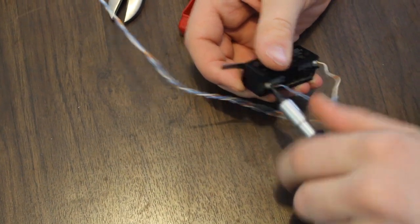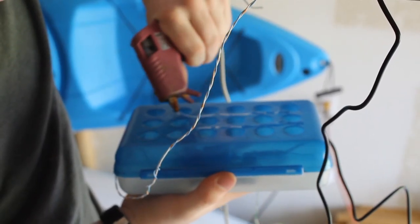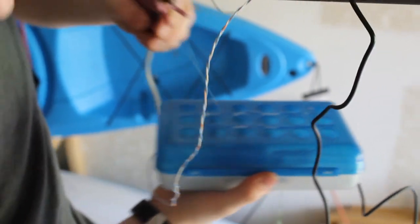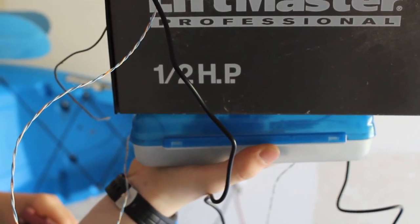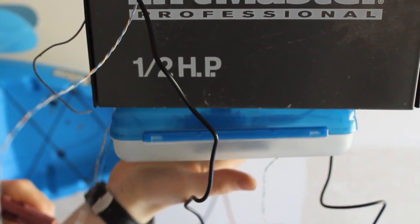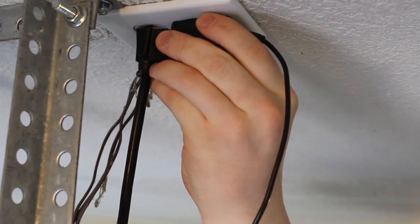Next we attach the wires to the circuit, glue the box onto the garage door, and plug it in.